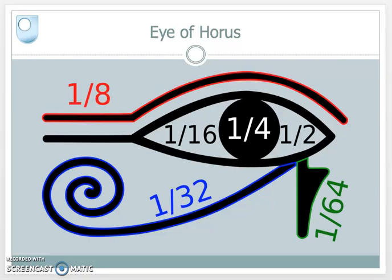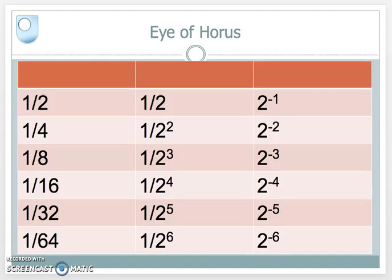So 5,000 years ago, the Egyptians were using a binary system. Their system was based on the powers of two, so a half, a quarter, an eighth, et cetera.